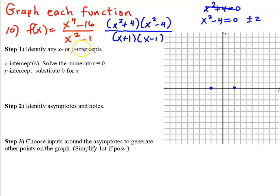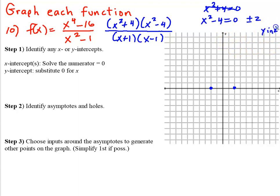For the y-intercept, plug 0 in for x in both x's and you get 16. That's pretty far up on the graph. I'll go ahead and scale the y-axis in 2's — 2, 4, and so forth — so we can see our y-intercept plotted.